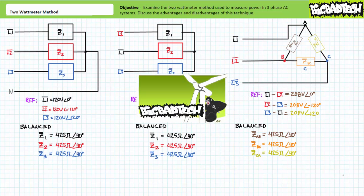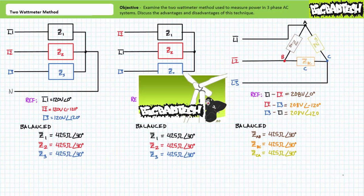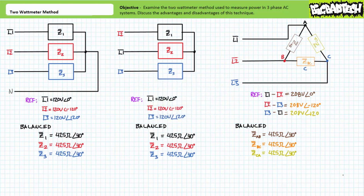This lecture operates under the presumption the viewer has more than a passing familiarity with the analysis of balanced and unbalanced four-wire Y, three-wire Y, and delta configurations in three-phase AC systems, as illustrated in the three-phase AC examples lecture available at the Big Bad Tech channel. Additionally, it is presumed the viewer has a nodding acquaintance with both the three-watt meter method and the single-watt meter method, as illustrated in the single-watt meter method lecture, also available at the Big Bad Tech channel. If you haven't watched these lectures yet or only dimly recall their contents, please take the time to do so now. So this lecture doesn't bog down in lengthy calculations, let's just use the results of the aforementioned three-phase AC examples lecture as a jumping-off point for our discussion.